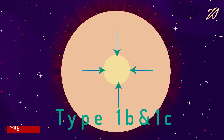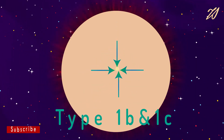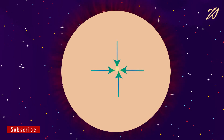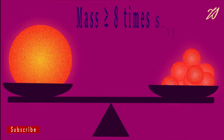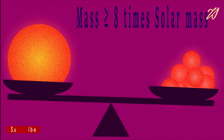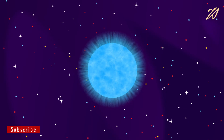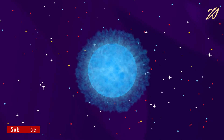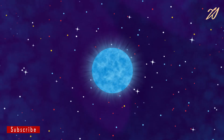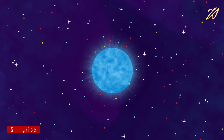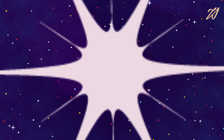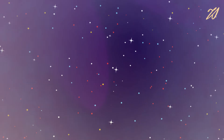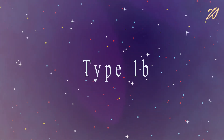Type 1B and 1C supernovae are also due to core collapse. For core collapse supernovae to happen, the star should have at least eight times the mass of the sun. For some supermassive stars, the hydrogen-rich outer shell blows away as stellar wind, exposing the helium-rich shell. The unstable star then explodes — this type of supernovae is type 1B.